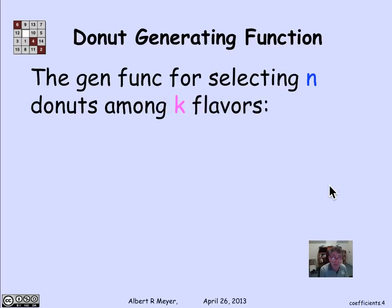So by the same reasoning, if I'm going to select n donuts and I have k possible flavors of donuts, then the generating function for that is the product of the generating functions for selecting each of the k flavors separately. And the product of them then is 1 over (1 minus x) to the k.